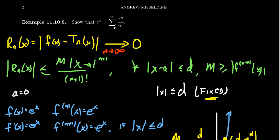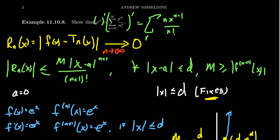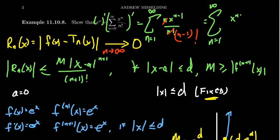One more observation: what happens if you take the derivative of this series? The right-hand side gives the sum of n·x^(n-1) over n! from n equals 1 to infinity, since the constant term vanishes. The n cancels with the n factorial, leaving x^(n-1) over (n-1) factorial summed from n equals 1 to infinity. By an index shift, this becomes the sum from n equals 0 to infinity of x^n over n factorial, which is just e to the x again.